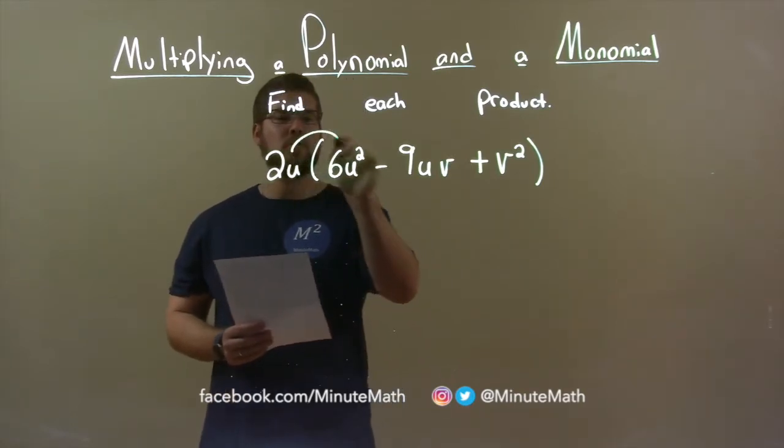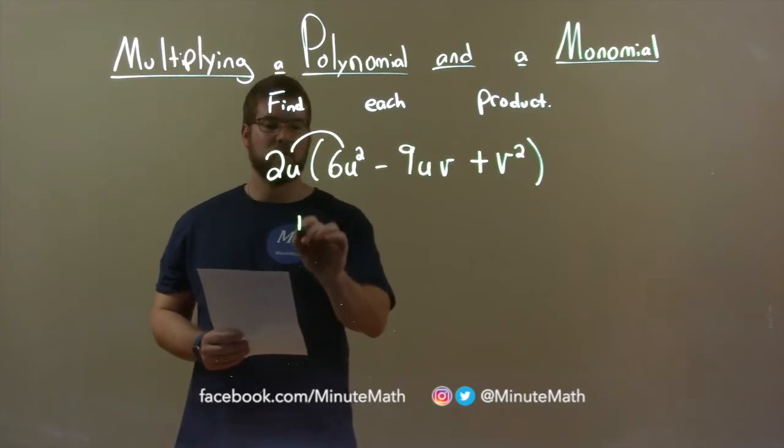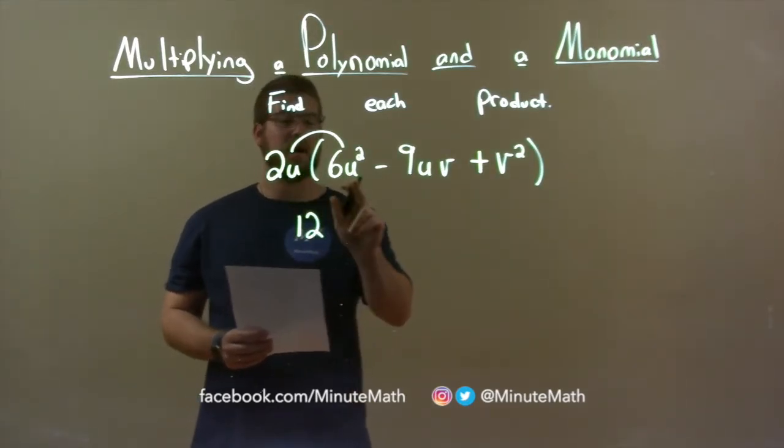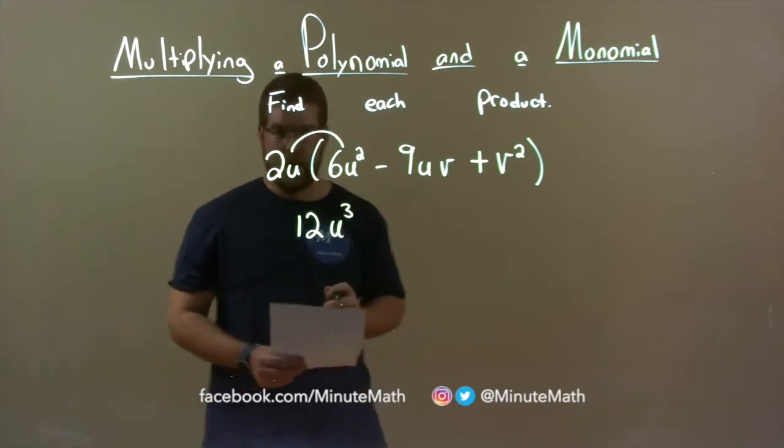So, 2u times 6u squared. Look at the coefficients: 2 times 6 is 12. And u times u squared is u to the third power.